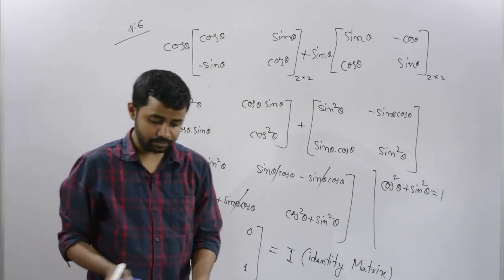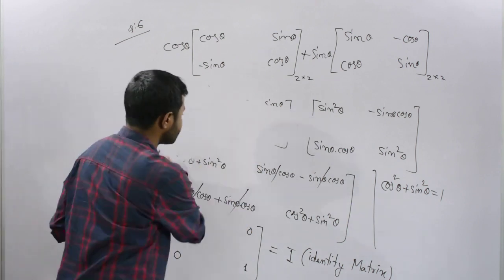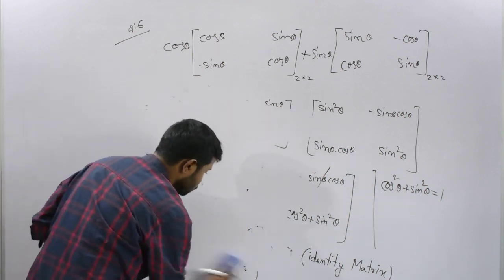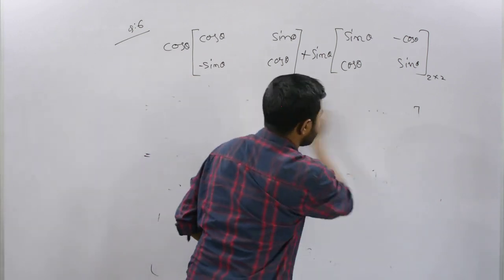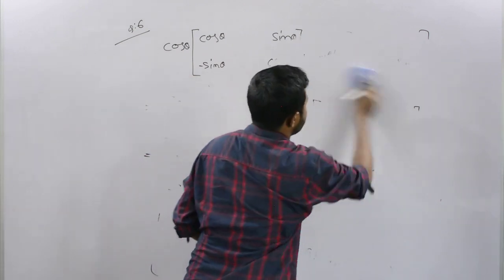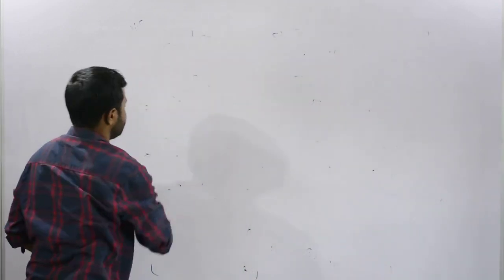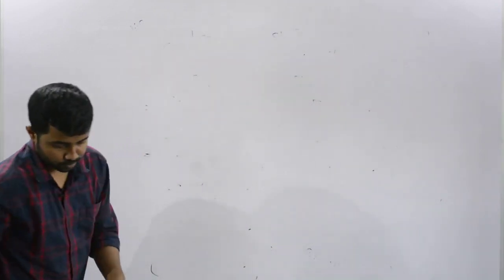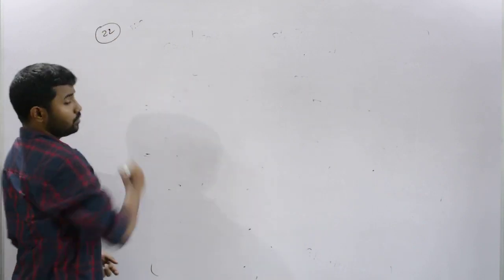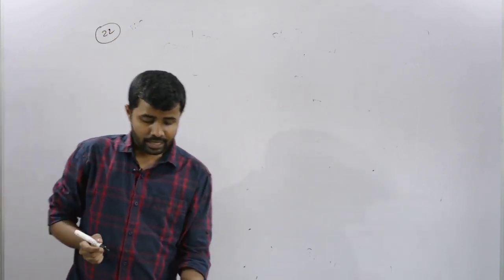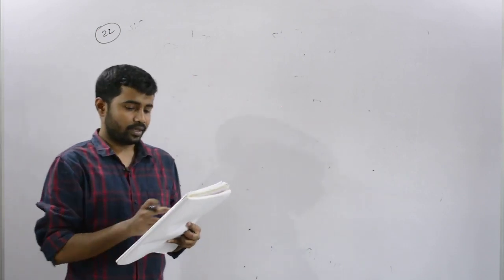Now we move to question number 22. We are given matrices: A is an x matrix of order 2 into n, B is a y matrix.